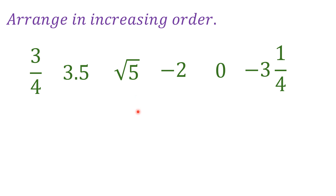How do we arrange them in order? We need to know their values first because they are in different forms — some are fractions, some are decimals, some are in radical form. So we have to write everything in decimal to make it easier for us to compare the values.